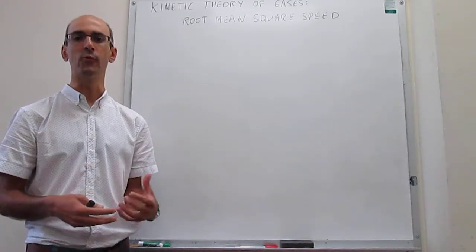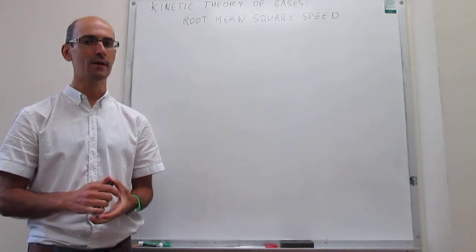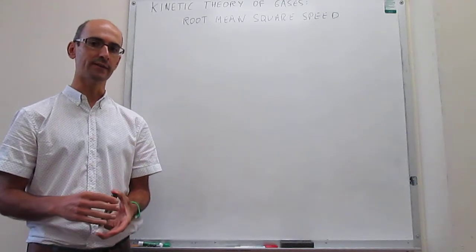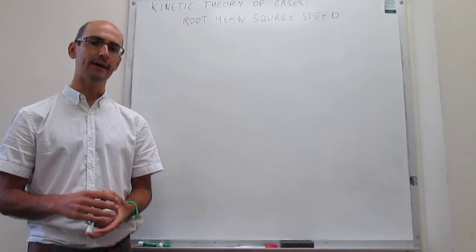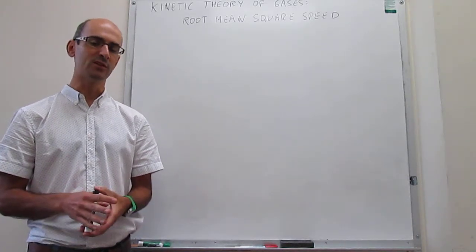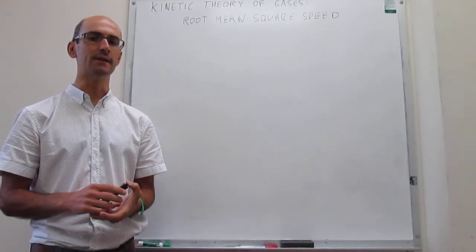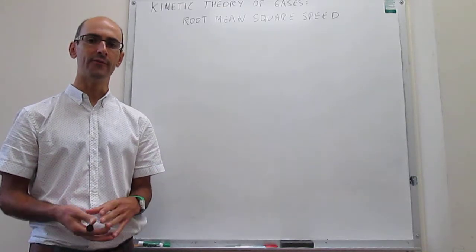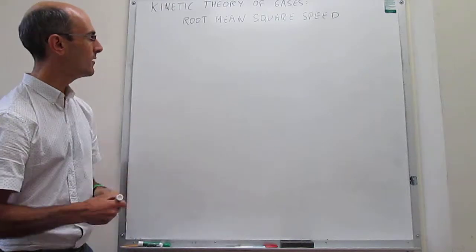So how fast they move, what is the kinetic energy and so forth. We're going to close this discussion of kinetic theory of gases by trying to figure out what the average speed squared, which is called the root mean square speed, is for a gas under a normal set of conditions.